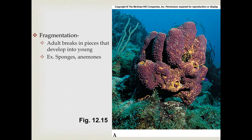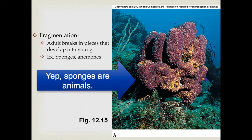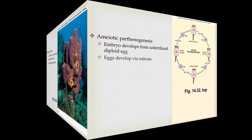Fragmentation is very similar to budding because you're breaking off a part of the adult individual, but it's a more haphazard process — if the animal is damaged and a piece breaks off, it forms into a new individual. Budding is a directed process, whereas fragmentation is accidental — like a boat running into a sponge and breaking off a piece. This is seen in sponges and anemones.